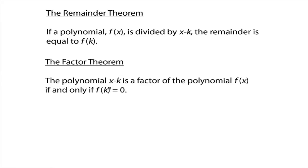Or if you were to do division and divide x minus k into f(x) and your remainder turned out to be 0, because that's what the Remainder Theorem was saying here, then x minus k would be a factor. If you're still a little shaky, hold on.